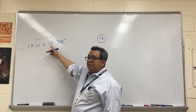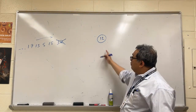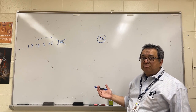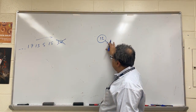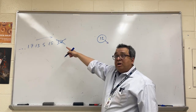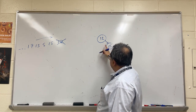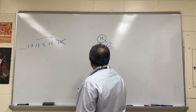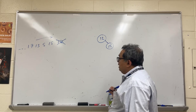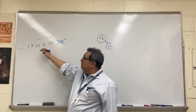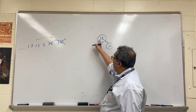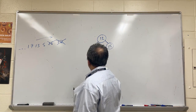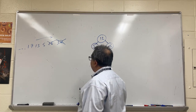Now the next number that comes along is 15. I ask a simple question: is 15 larger or smaller than 12? It's larger, so I go to the right. There's nothing there, so I park the 15 there. Next is 5 - is 5 greater than or less than 12? Less than, so I put 5 to the left.